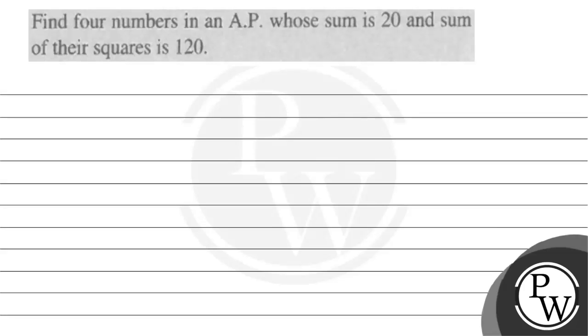Hello Bichu, let us see the question. The question says find four numbers in an AP whose sum is 20 and the sum of their squares is 120.